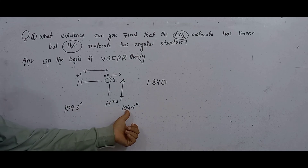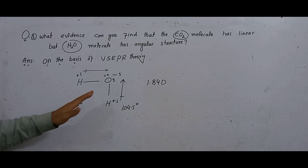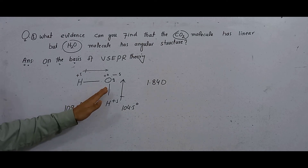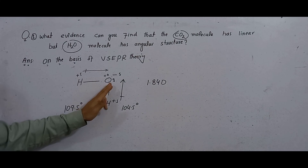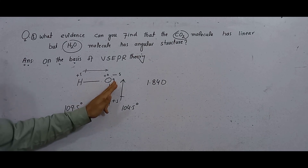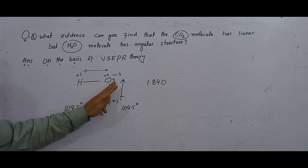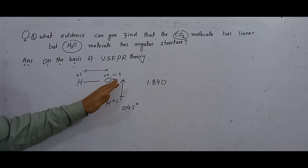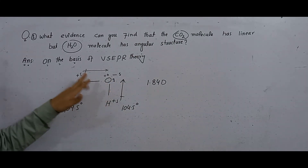The ideal tetrahedral angle will decrease from 109.5 degrees to 104.9 degrees. So we can say that the shape becomes angular, V-shape or bent shape, due to the repulsion of the lone pair on the bond pairs. Because this lone pair has more repulsion power than a bond pair, it pushes the bond pairs inside and the angle decreases, making the shape angular.